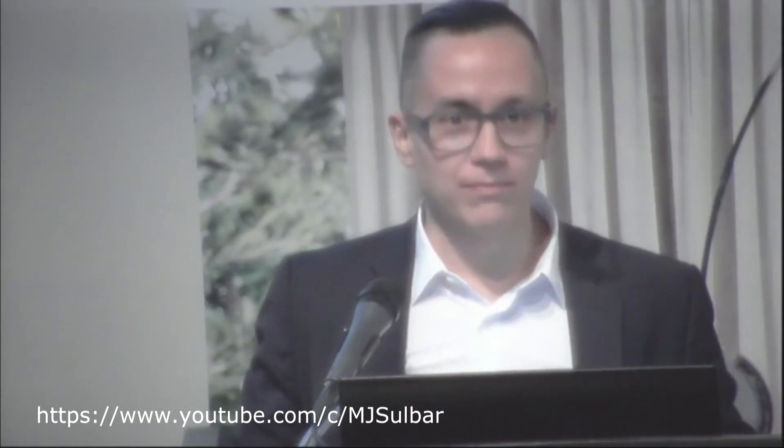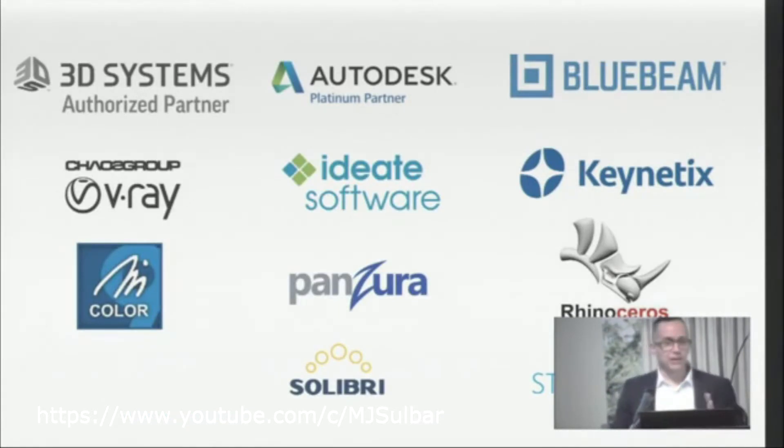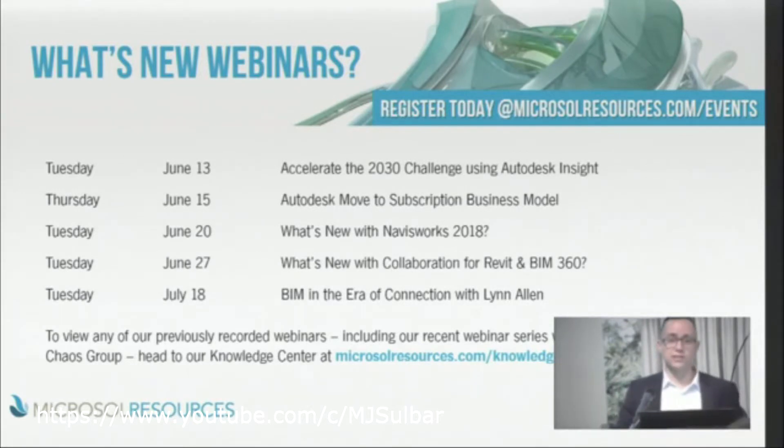A little bit about who we are at Microsoft Resources. We are an AEC-based Autodesk reseller, but we also partner with a number of other vendors, like Chaos Group. We've been in business for over 30 years, mainly focusing on architecture, engineering, and construction. Aside from Chaos Group, we also partner with Autodesk, McNeel — which produces Rhino — Panzura, and a number of other vendors that help define how the AEC industry and visualization experts within those firms work.